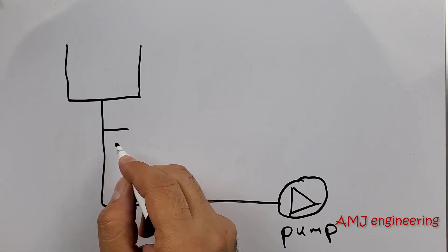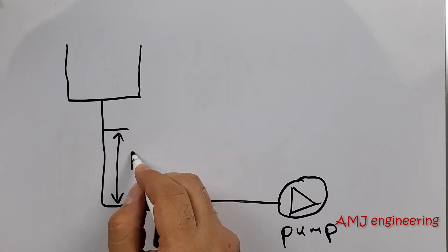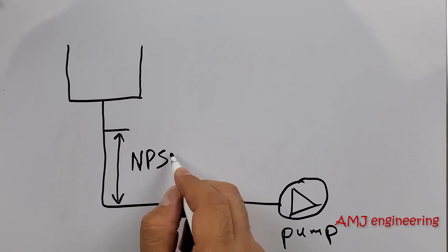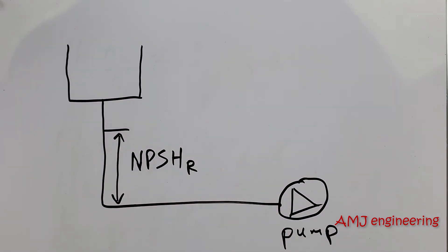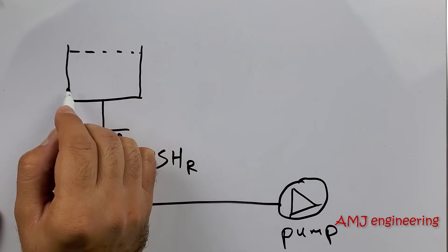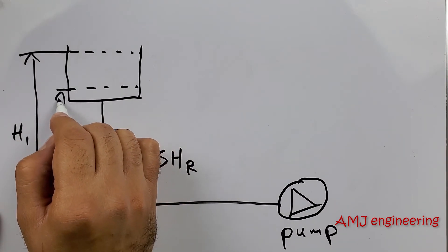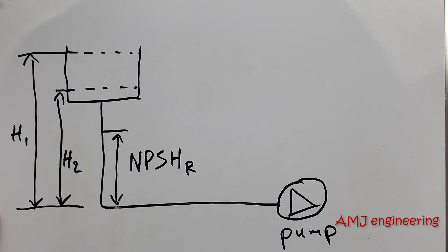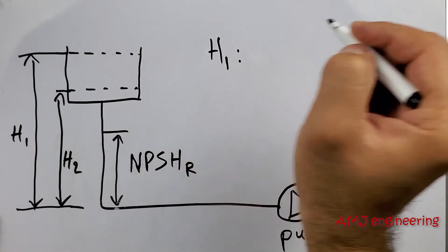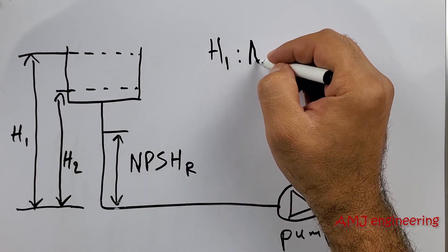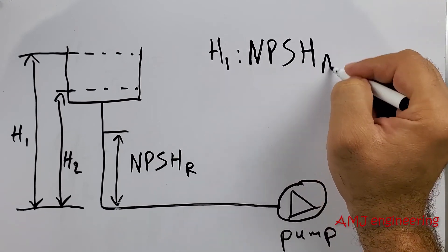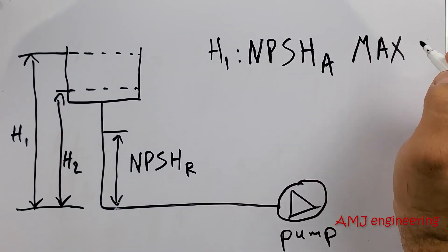To better understand it, let's see this example here. Let's consider this head as the pump NPSH required. H1 is the NPSH available max, which is the head corresponding to the maximum water level.